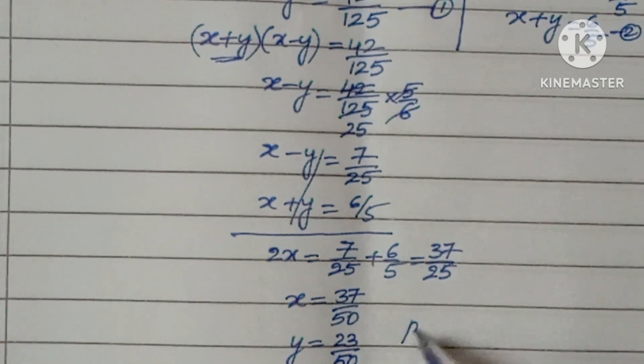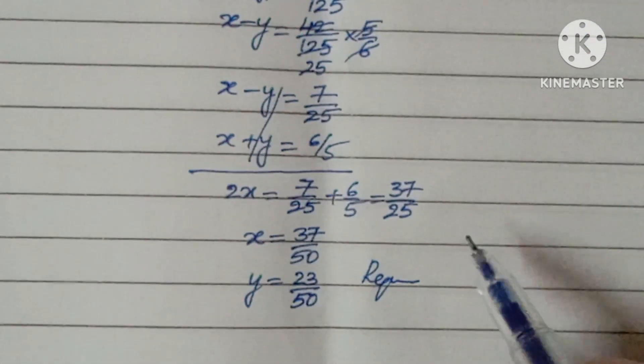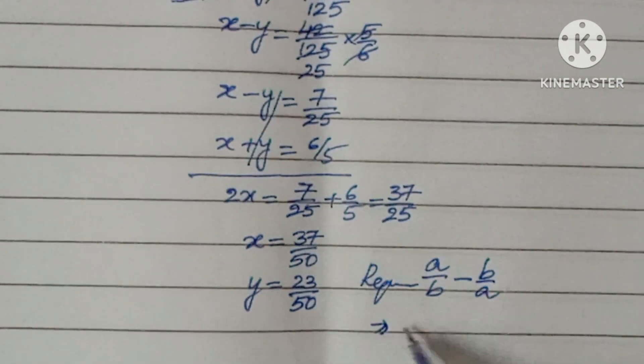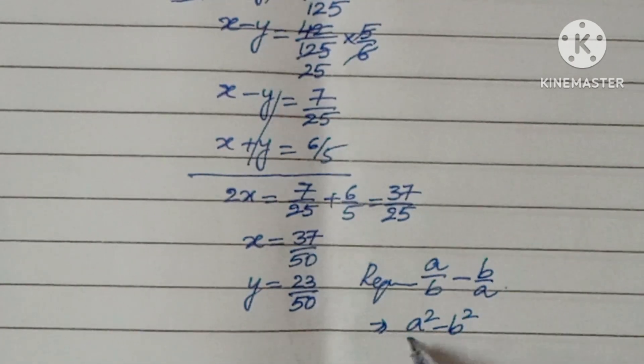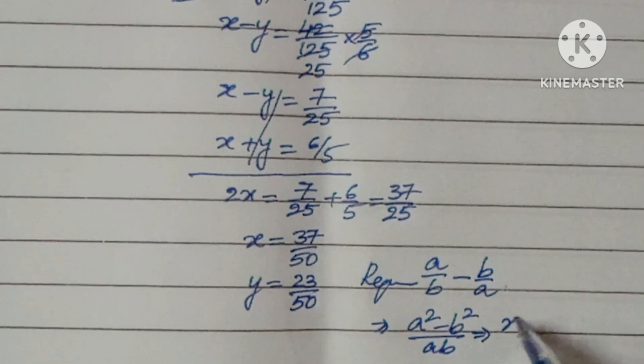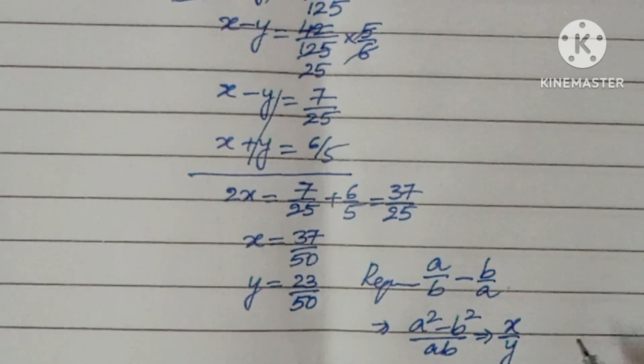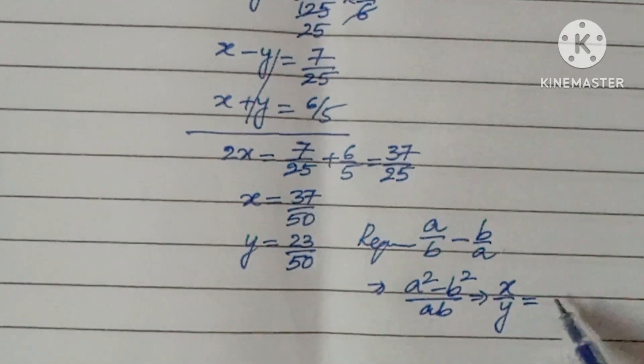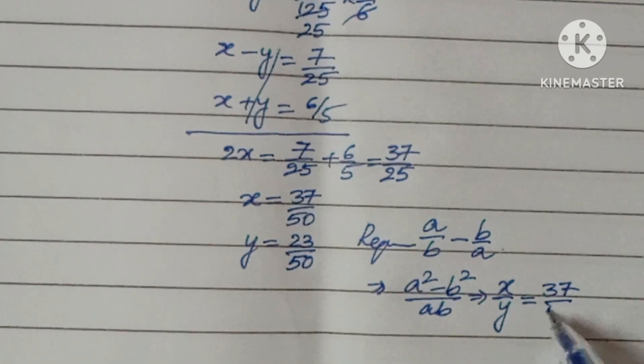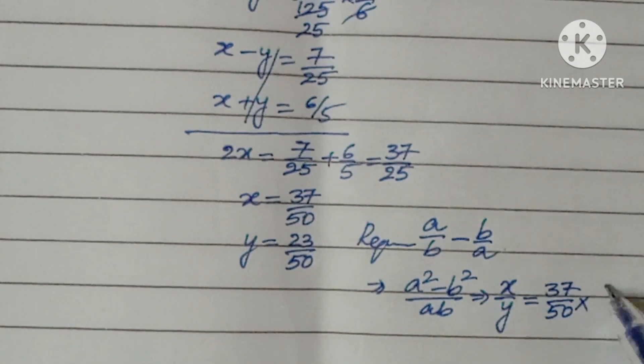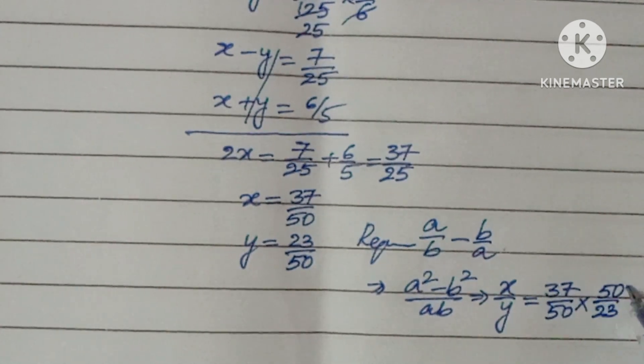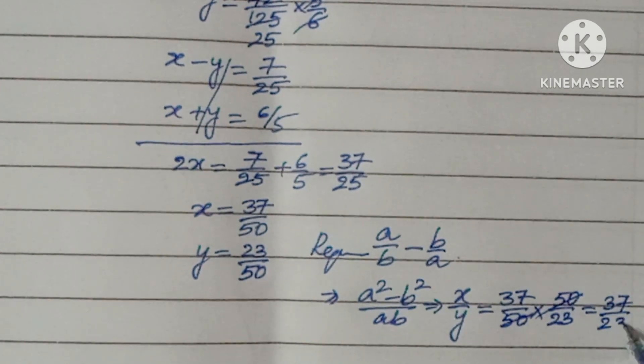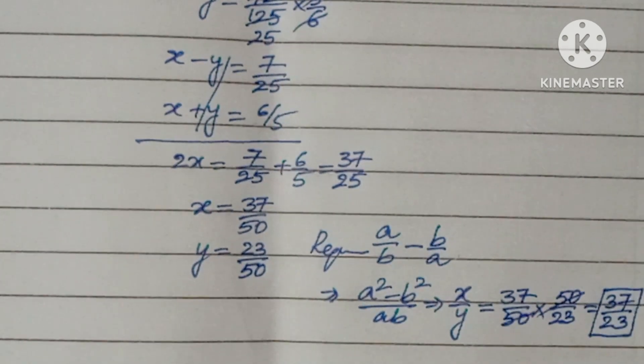Now what is required here: a/b - b/a. So this is nothing but (a² - b²)/ab, which is nothing but x/y. What is x? a² + b² minus b². y is ab. So the answer what you are getting is 37/50 × 50/23, both get cancelled, so the final answer is 37/23.